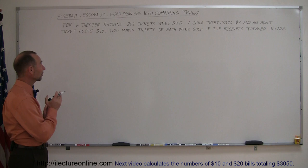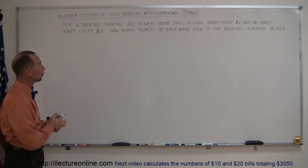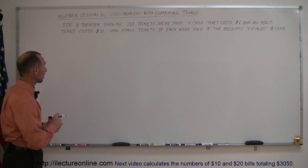It says here, for a theater showing 202 tickets were sold, a child ticket cost $6 and an adult ticket cost $10. How many tickets of each were sold if the receipts totaled $1,708?